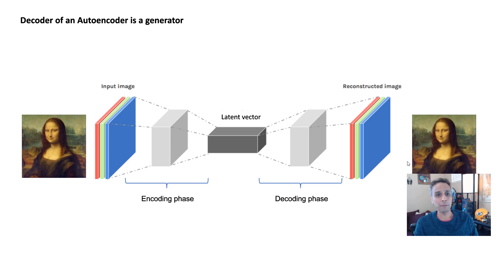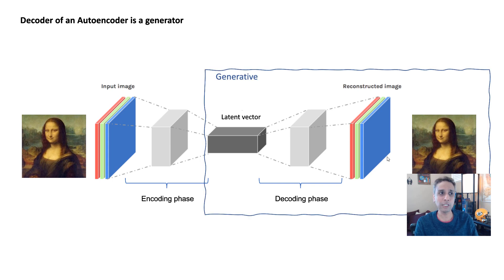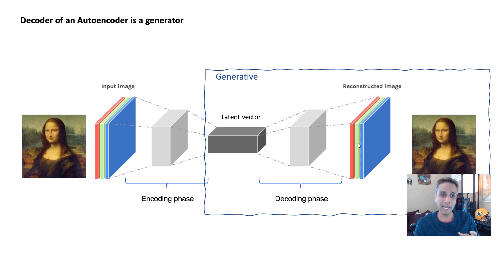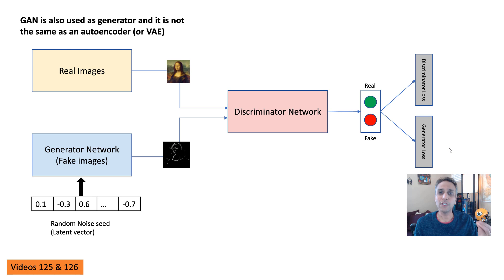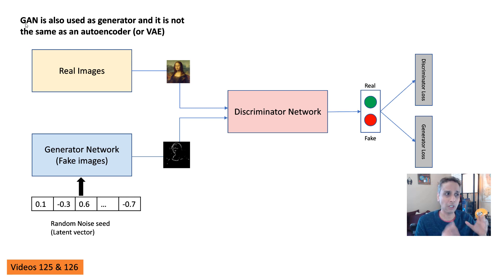Now, the decoder part of an autoencoder is essentially a generator — it generates data as long as we provide a latent vector. If my vector is 1, 2, 3, 4 and the decoder has pre-trained weights, it will generate an image. Once trained, it generates new images. This decoder is nothing but a generator.